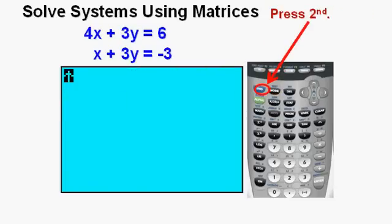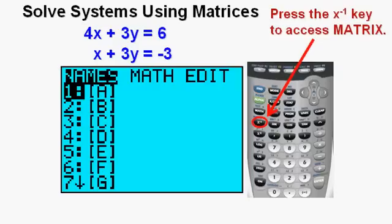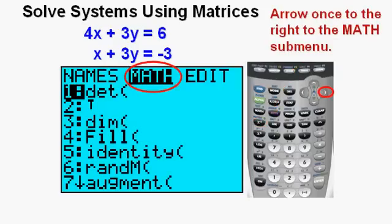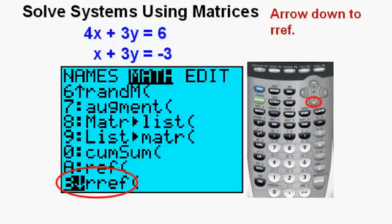For the next step, press second, then the x to the negative 1 key on the left to access the matrix menu. Arrow once to the right to the math submenu. Arrow down until you get to the RREF choice. RREF stands for Reduced Row Echelon Form. And I'll just mention it here, a little shortcut. Instead of scrolling all the way down to B, you can access RREF by pressing alpha, then the apps key that has the B above it. Press enter.